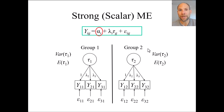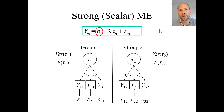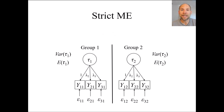Under strong or scalar invariance, both the units and the origin of measurement are the same across groups, so the latent scales τ1 and τ2 are directly comparable. Notice also that the latent variances can be compared — and importantly, these are independent of the error term variances ε, so what we are comparing are the true score variances rather than variances that might differ due to measurement error. That's another strength of this approach.